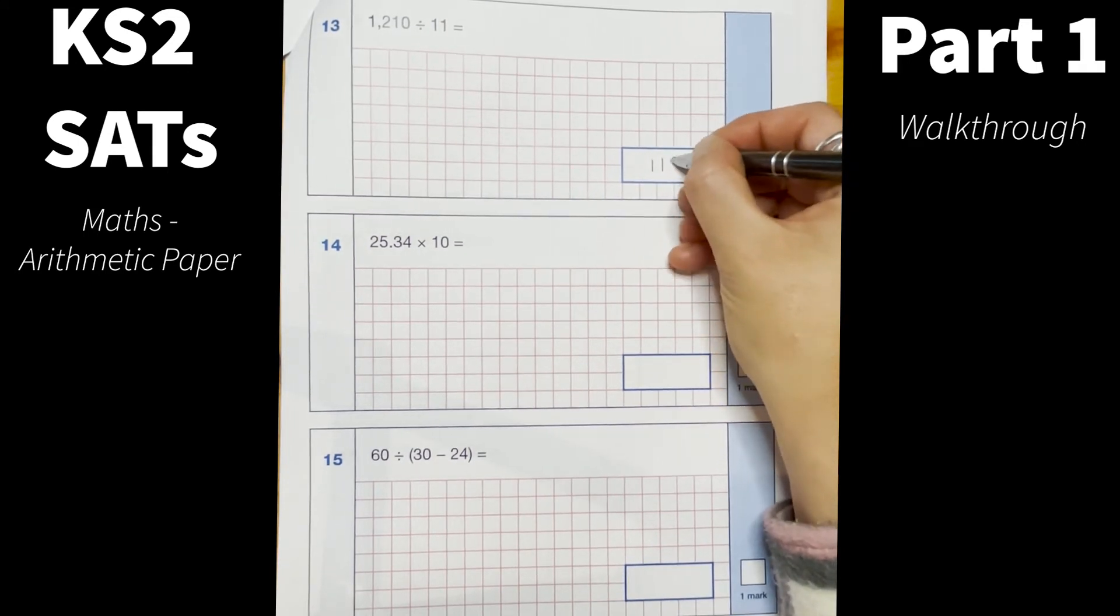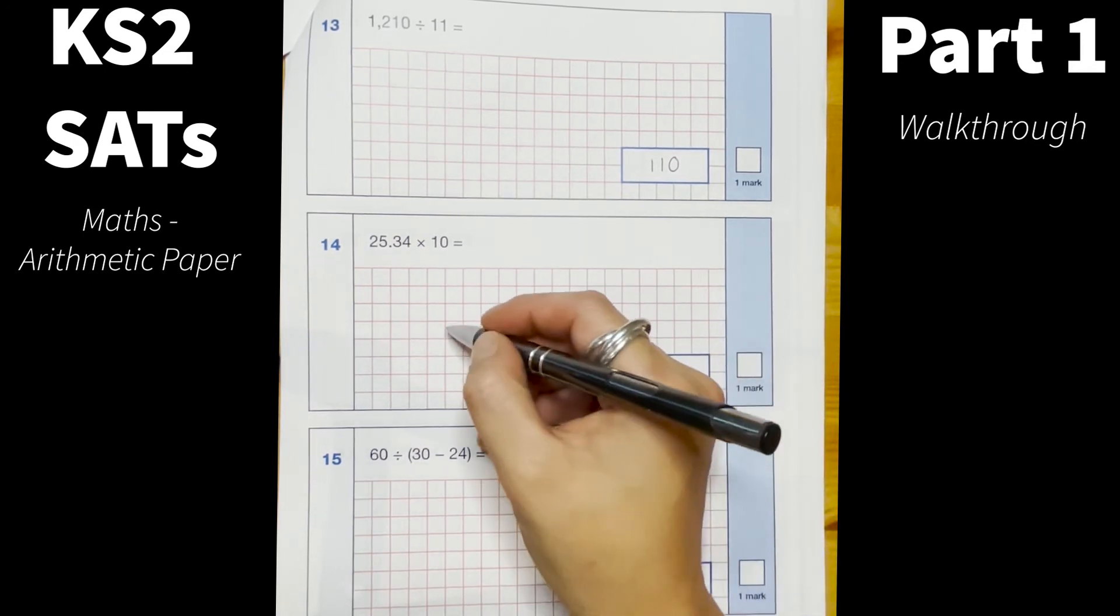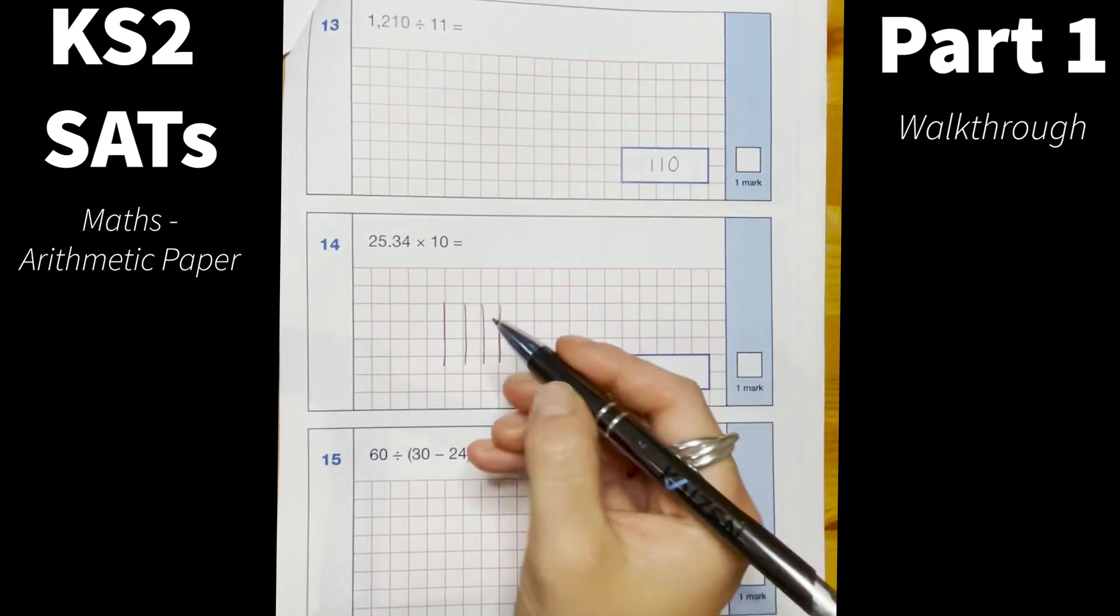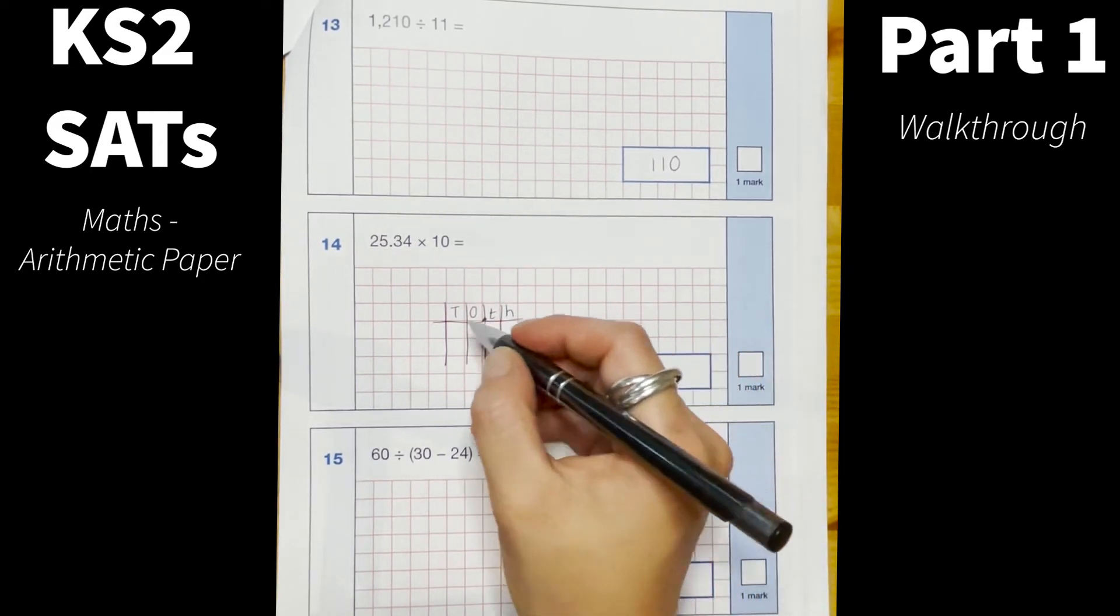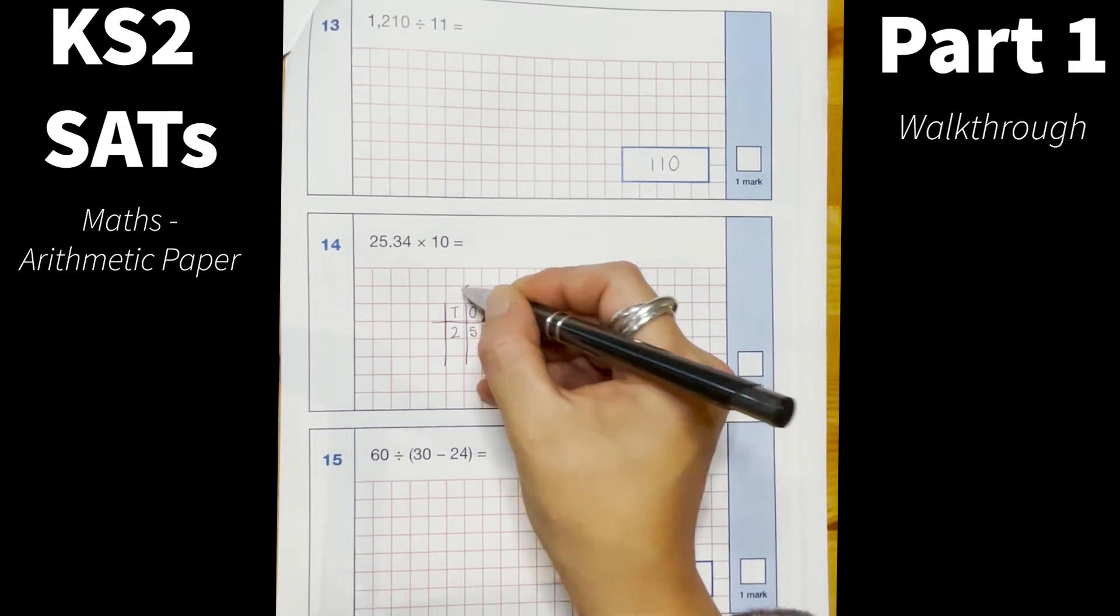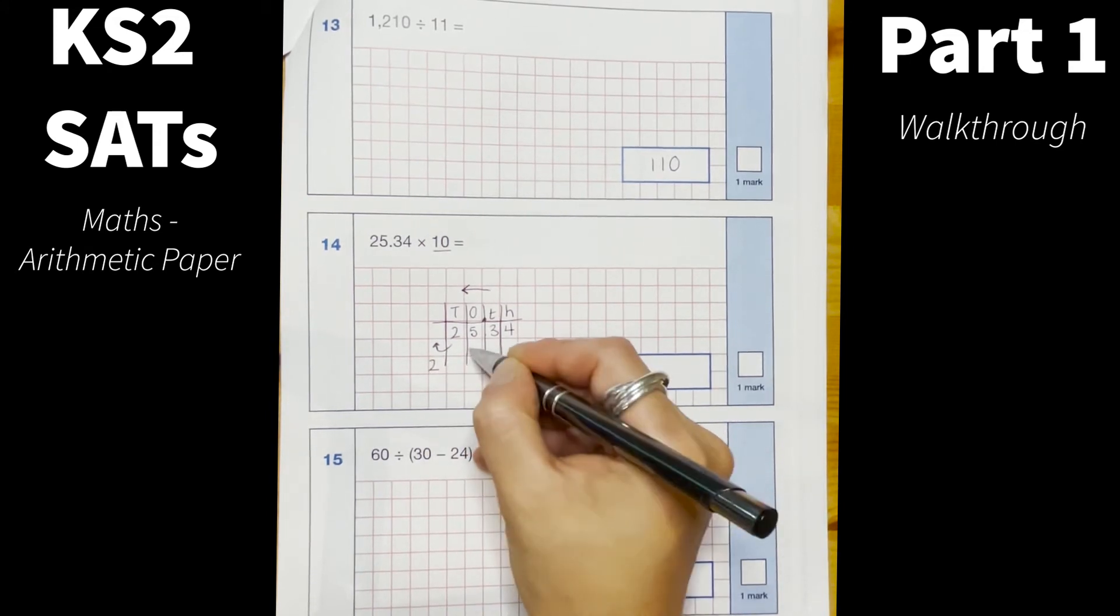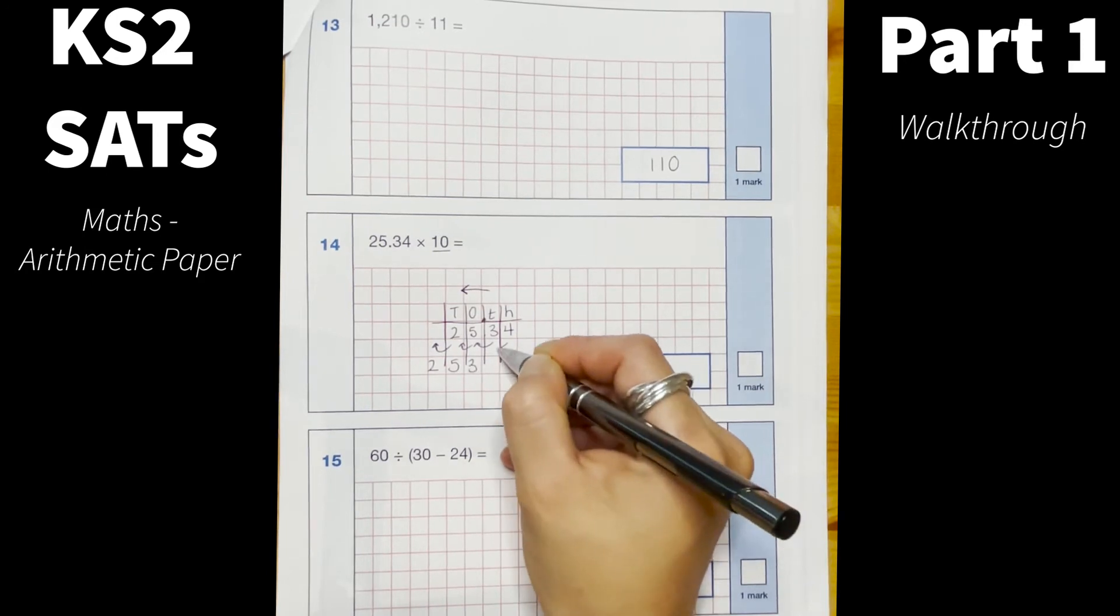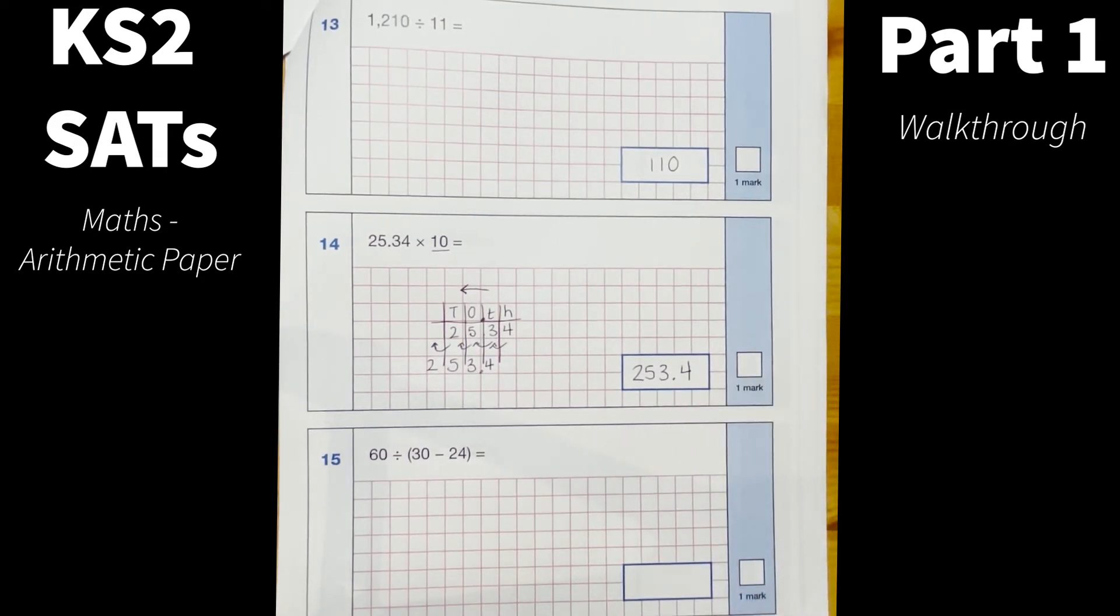Okay number 14, 25.34 times 10. Now this is something that children usually get a little bit confused with when we are multiplying and dividing by 10, 100 and a thousand. A way that they can do this is by simply just drawing onto their paper a place value grid. So if I have my tens, my ones, my decimal point, tens, hundreds. So I've got 25.34 and I'm timesing my number by 10, so my digits are going to be moving to the left and because I'm timesing by 10 they're each going to move one place. So I know that my answer is going to be 253.4.